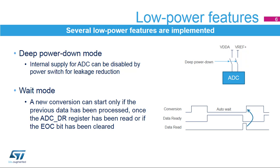The ADC supports a deep power down mode. When the ADC is not used, it can be disconnected by a power switch to further reduce leakage current. When wait mode is active, the ADC waits until the last conversion data is read or the end-of-conversion flag is cleared before starting the next conversion. This avoids unnecessary conversions and thus reduces power consumption.